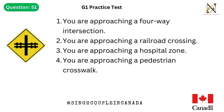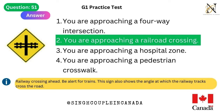Question 51. This traffic sign means: 1. You are approaching a four-way intersection. 2. You are approaching a railroad crossing. 3. You are approaching a hospital zone. 4. You are approaching a pedestrian crosswalk. Answer is 2. You are approaching a railroad crossing — railway crossing ahead, be alert for trains. This sign also shows the angle at which the railway tracks cross the road.